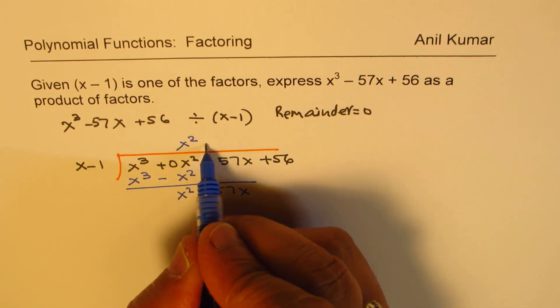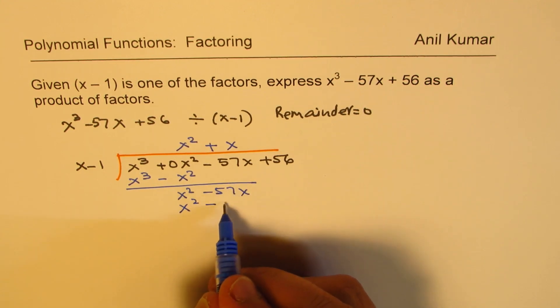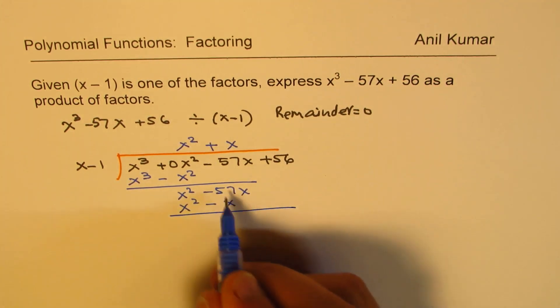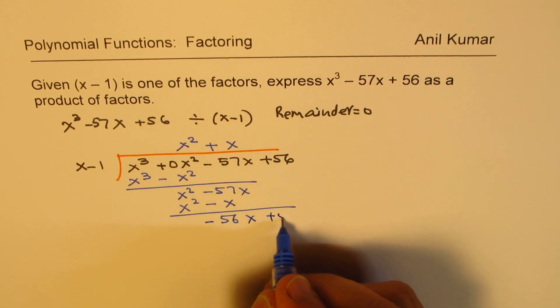Now we will do plus x times. So we get x squared minus x. And that gives you 56 with a negative sign, x. Bring down 56.